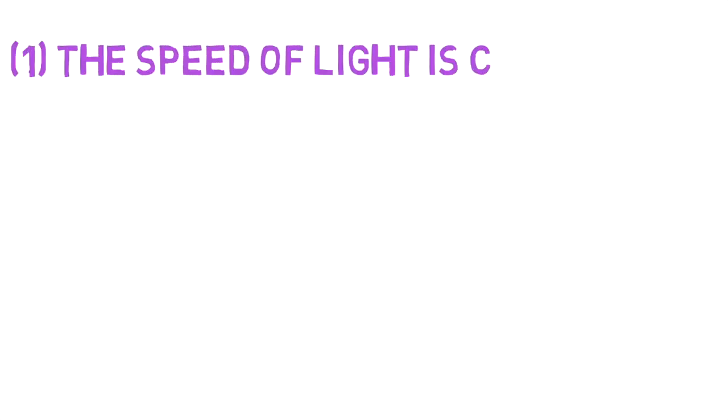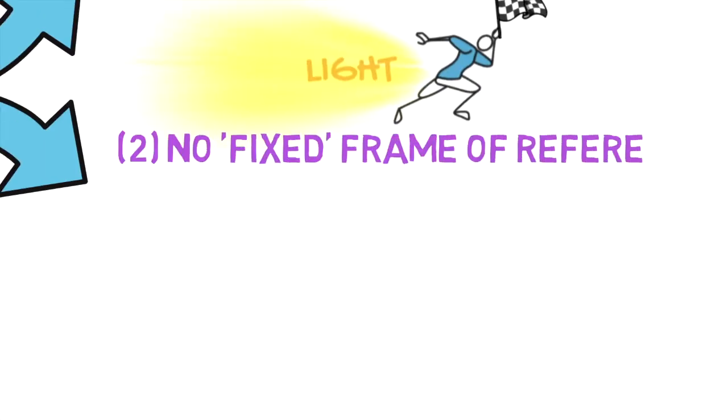The speed of light is constant. Light is the fastest thing possible. It also always travels at the same speed, no matter what or where. And the second is that there is no fixed frame of reference.